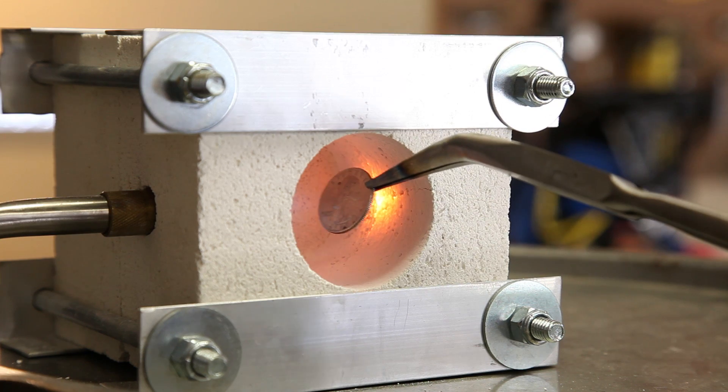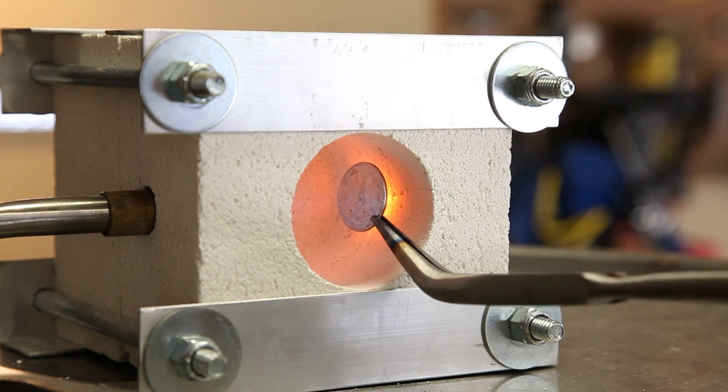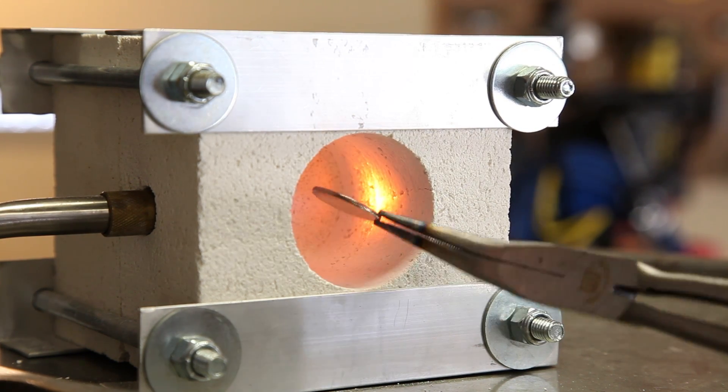Using some long pliers, take a quarter and insert it into the mini-forge. You'll want to rotate it every few seconds to heat it evenly.